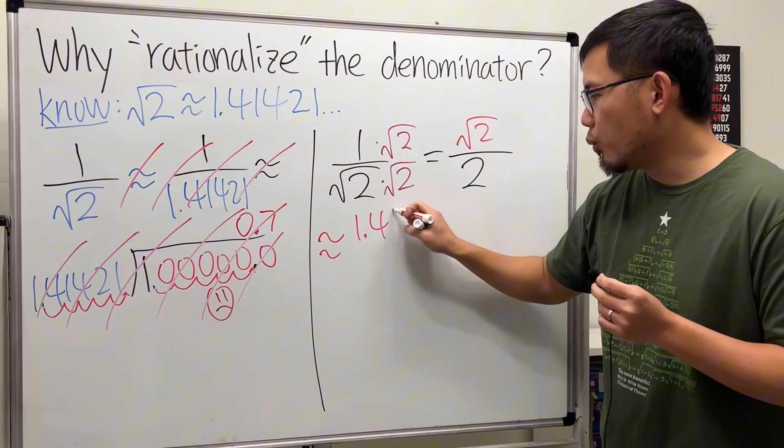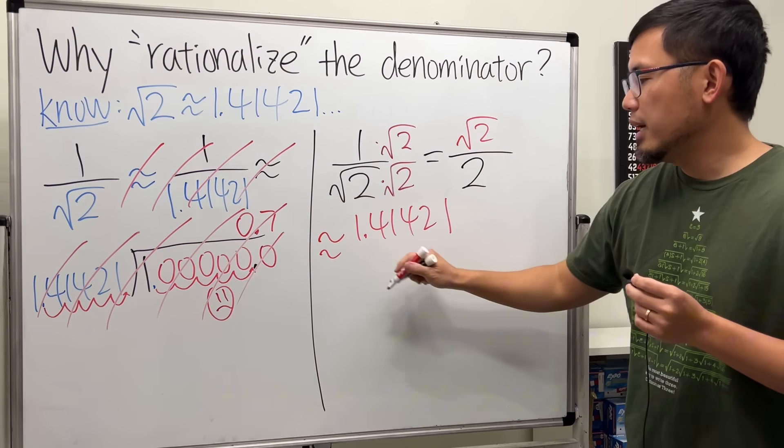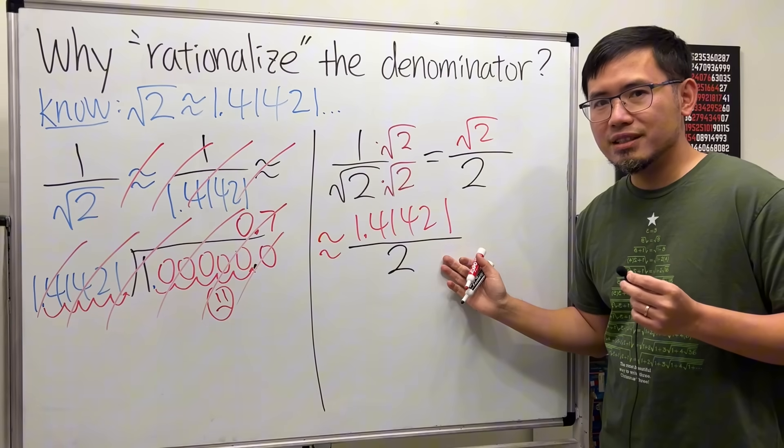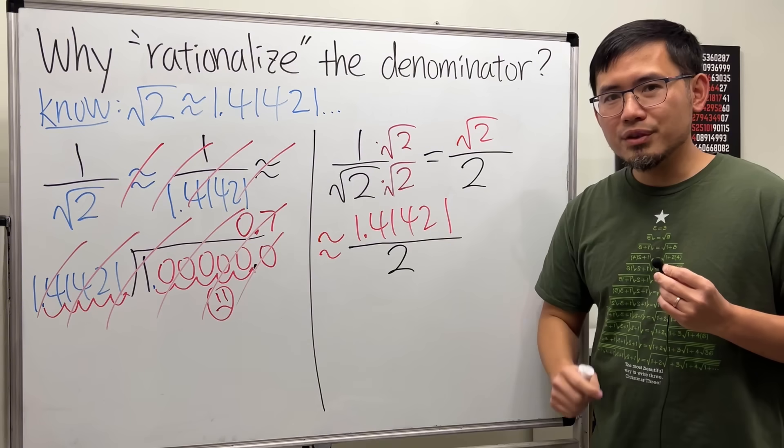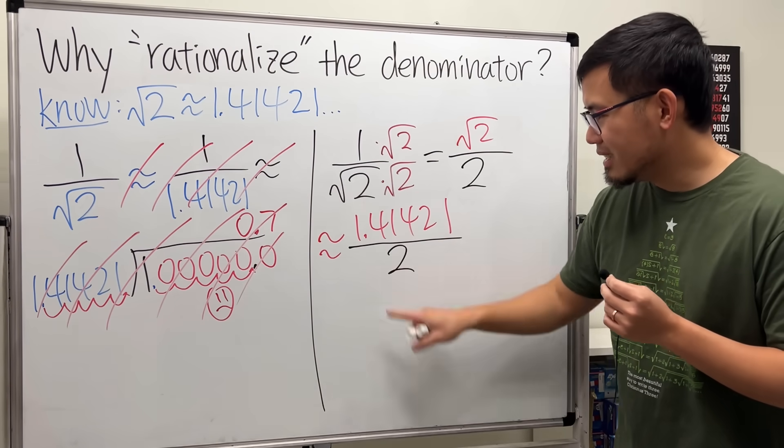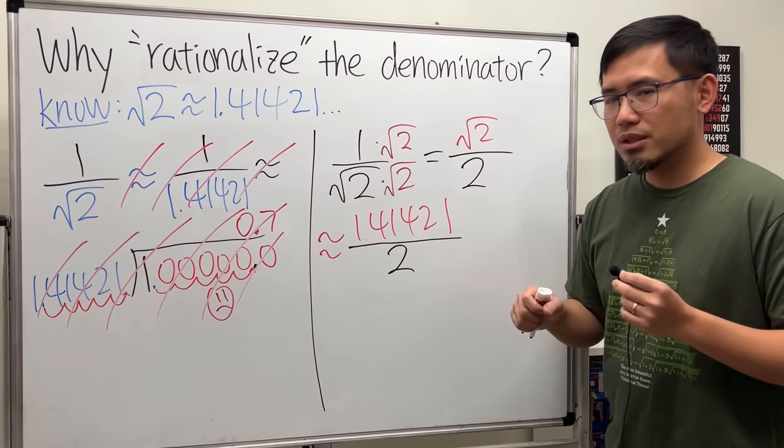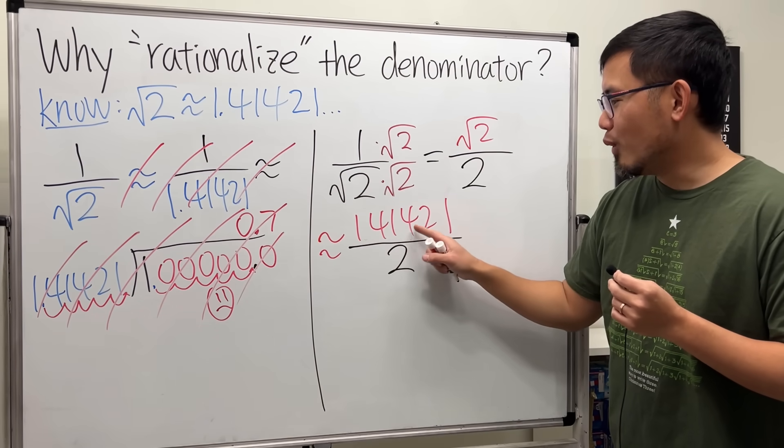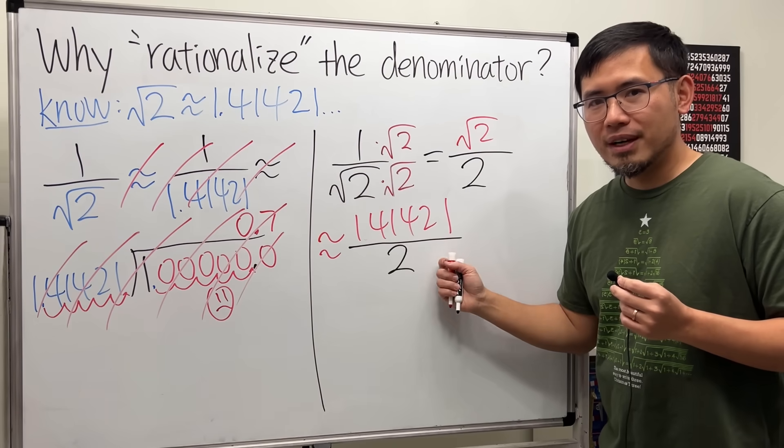And if we divide this by 2, can we do this easily? Yes! Some of you can even do this in your head. Let me help you a little bit. Erase the decimal point, look at this as 141,421 dollars, and divide by 2.